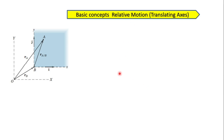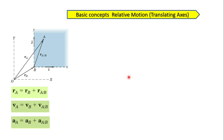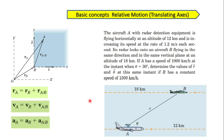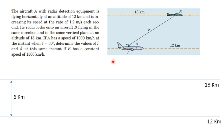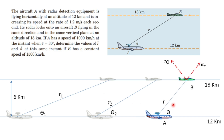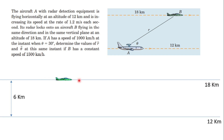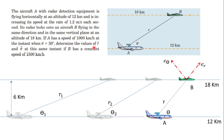In this video we'll see basic concepts of translating axis system or relative motion analysis using one example. The question is about how we evaluate the relative velocity, position, and accelerations of one particle with respect to another. The aircraft A, with radar detection equipment, is flying horizontally at an altitude of 12 km and increasing its speed at 1.2 m/s². Its radar locks onto aircraft B flying in the same direction and vertical plane at an altitude of 18 km, with a speed of 1000 km/h. At the instant when theta is 30 degrees, determine R double dot and theta double dot.